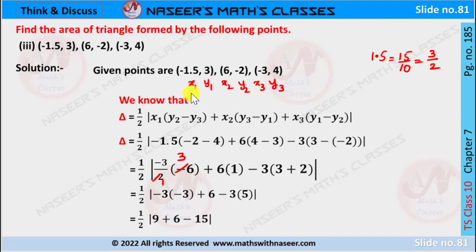These are the three points. Let x1 as minus 1.5, y1 as 3, x2 as 6, y2 as minus 2, x3 as minus 3, and y3 as 4.